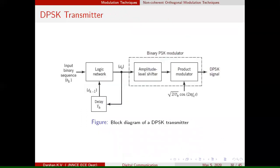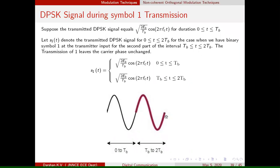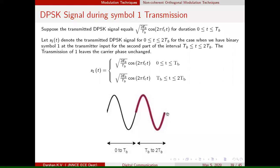For symbol 1 transmission, there is no change in phase during successive time intervals. When symbol 1 is transmitted, if you observe the waveform over the two time intervals — 0 to TB and TB to 2TB — the phase remains the same. The basic logic is: when transmitting symbol 1, the initial phase of the carrier is kept the same.